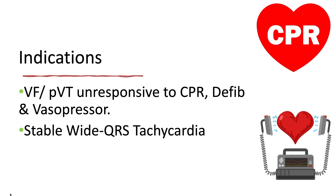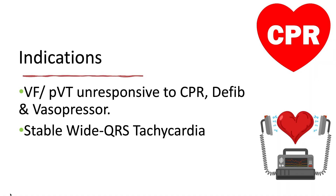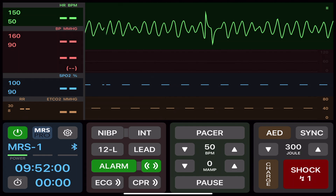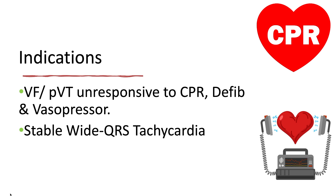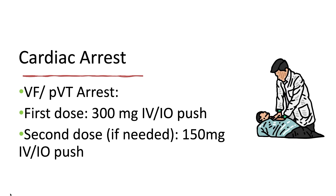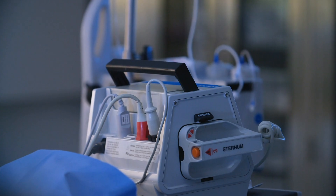Amiodarone is also known in the ICU, ER, and EMS environment as amio. Some common names for amio are Cordarone and Pacerone — I like to call it the big A. The indications for amiodarone include ventricular fibrillation and pulseless ventricular tachycardia. Amiodarone can also be used when a patient has a stable wide QRS tachycardia, and in treatment of VF or pulseless VT unresponsive to high quality CPR, defibrillation, and a vasopressor.